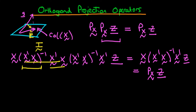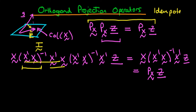This property, which we've just proved for the orthogonal projection operator PX, is what we call the operator being idempotent — or the matrix being idempotent — which means that if you operate it on itself, it just yields itself.